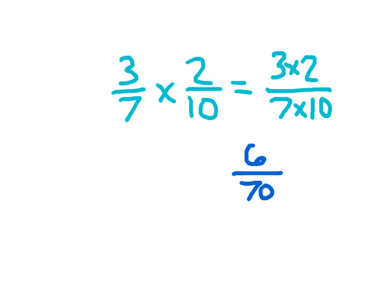Is 6 seventieths in simplest form? They're both even numbers, so we can divide them by 2. It is not in simplest form. We need to put this in simplest form. 6 divided by 2 is 3, and 70 divided by 2 is 35.